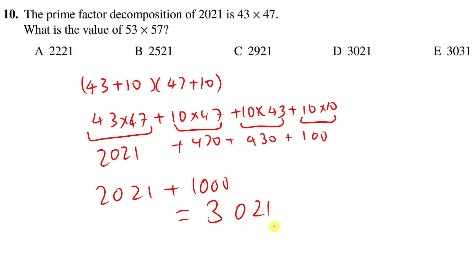Such a lovely question. Just a classic case of look, actually you could just have done 53 times 57. And I'm going to be honest, it might even have been quicker, but where is the joy? Where's the elegance in that answer? So the answer is 3021.